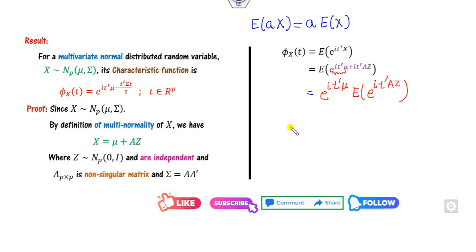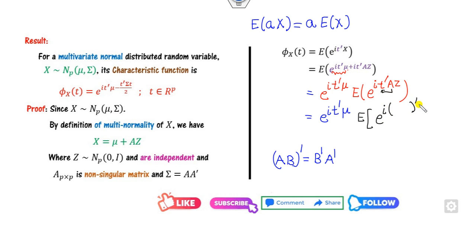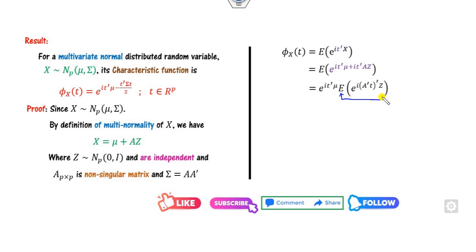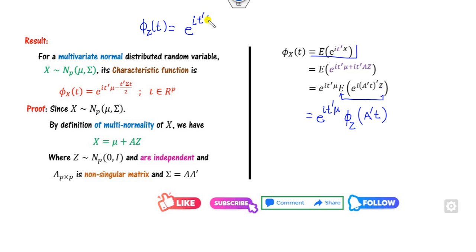We can rewrite T transpose A as (A transpose T) transpose, using the property that (AB) transpose = B transpose A transpose. So the expectation becomes the expected value of e^(iota (A transpose T) transpose Z). Comparing this with the definition of the characteristic function, this is the characteristic function of Z evaluated at the parameter A transpose T.